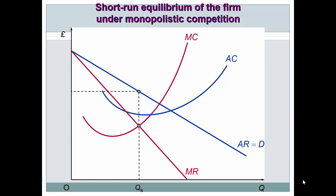The profit-maximizing quantity is Qs, at the point where MC equals MR, and the price Ps is determined by tracing upward from that point. The supernormal profit per unit is the difference between price Ps and the short-run average cost. The shaded area — quantity Qs times the per-unit profit — represents total supernormal profit. The position of the demand curve and its elasticity determine how large this profit area is.